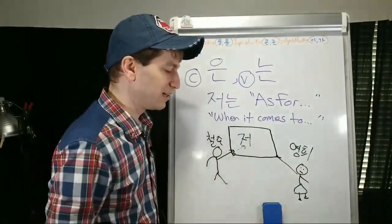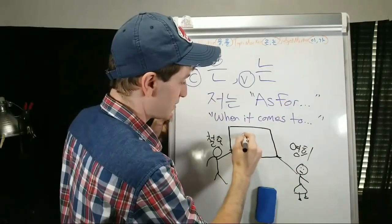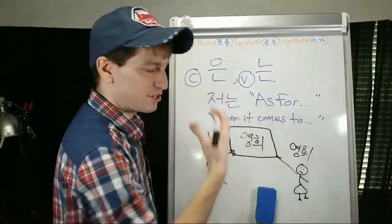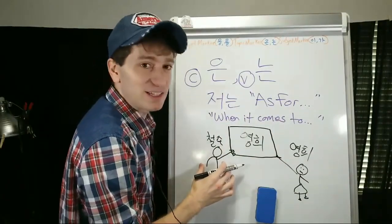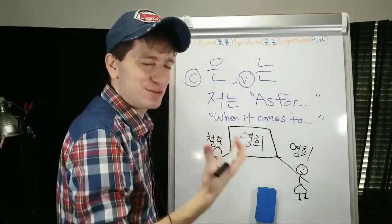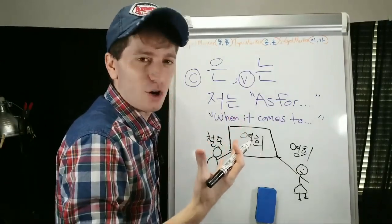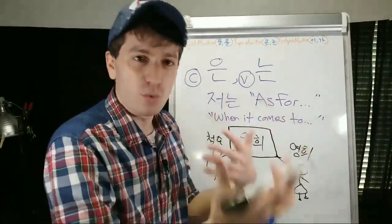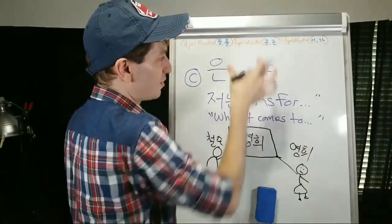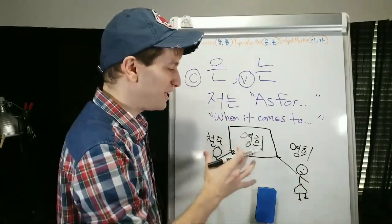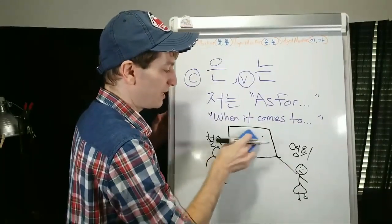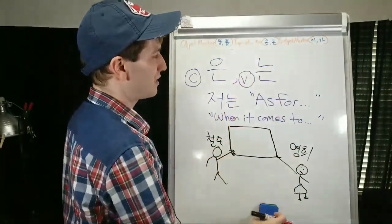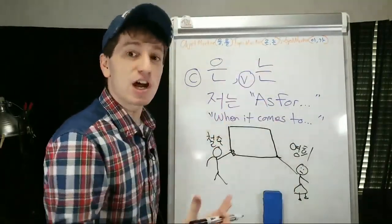Without using another topic marker, anything anyone says is going to be about that topic. For example, Chersu says 저는 김치를 좋아해요 ('I like kimchi'). Then 영이는 — now we're talking about Youngie. K-pop 좋아해요? ('Do you like K-pop?') Then Chersu can say 아파트가 있어요? ('Do you have an apartment?') When you use the topic marker, it changes what you're talking about. You don't need to keep saying 저는, 저는, 저는 once you've said it once — the topic marker tells the other person: let's talk about this now.